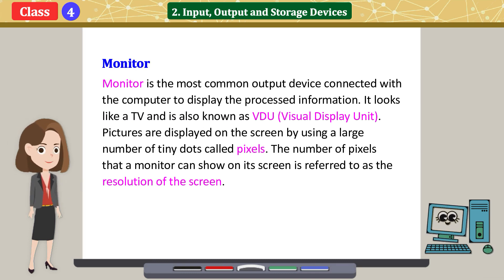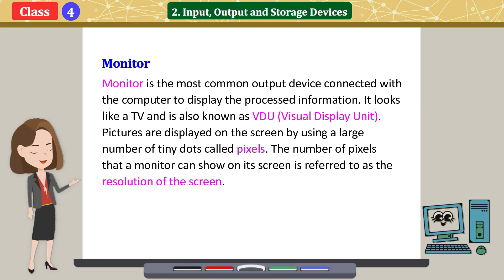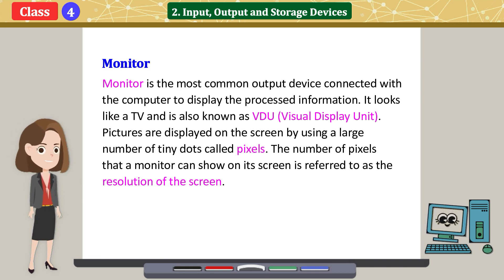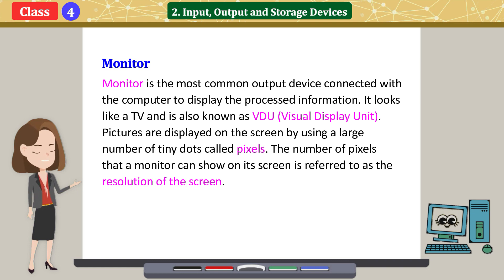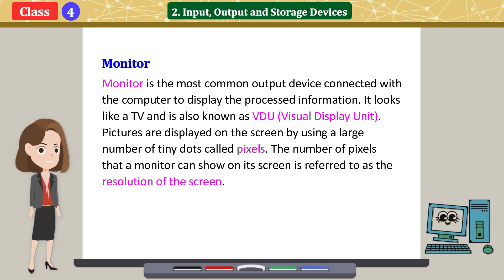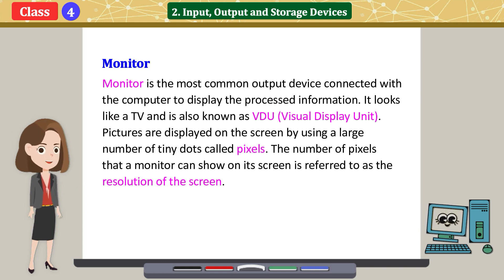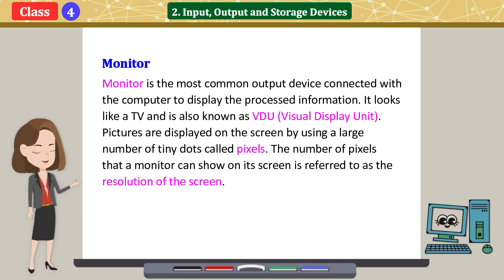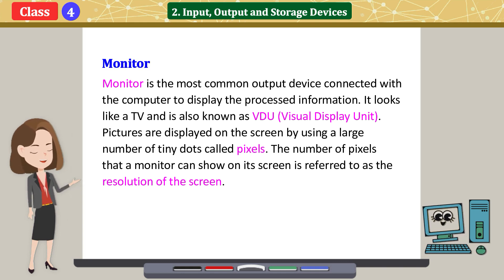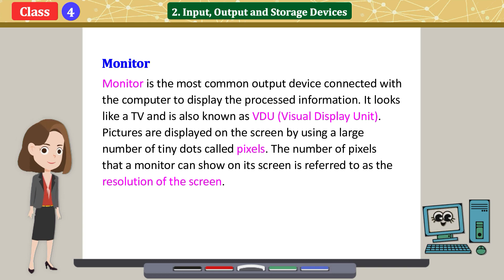Monitor is the most common output device connected with the computer to display processed information. It looks like a TV and is also known as a display. Pictures are displayed on the screen by using a large number of tiny dots called pixels. The number of pixels that a monitor can show on its screen is referred to as the resolution of the screen.